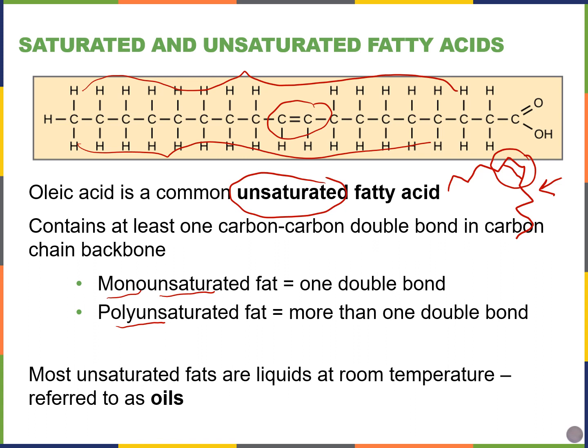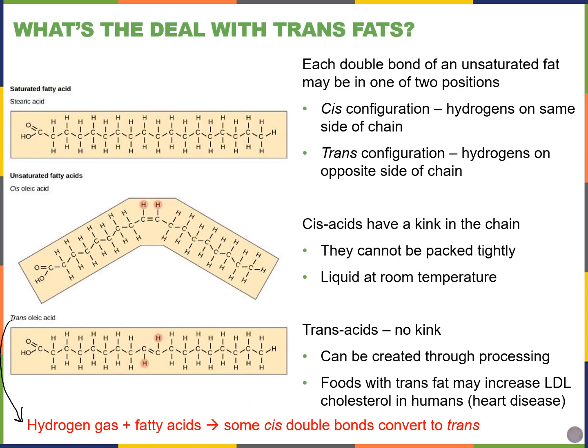Because they're bent, unsaturated fatty acids can't pack tightly like saturated fatty acids could. This means they tend to be liquid at room temperature — these are oils like olive oil. On the left side you can see both saturated fats without double bonds and unsaturated fats with one or more double bonds in the fatty acid tail region.